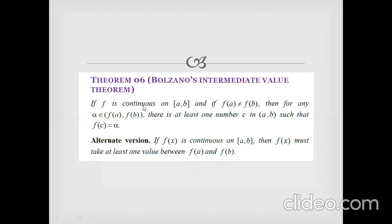Bolzano's Intermediate Value Theorem states: if f is continuous on the closed interval [a, b] and f(a) ≠ f(b), then for any α belonging to the open interval (f(a), f(b)), there is at least one number c in (a, b) such that f(c) = α. Alternatively: if f(x) is continuous on [a, b], then f(x) must take at least one value between f(a) and f(b). If you pick any value α between f(a) and f(b), you will find a c in the domain such that f(c) = α.